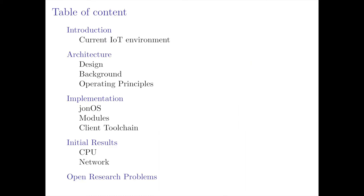This talk is structured in five different sections. First of all, I would like to talk about the context in which this new OS architecture is located. Then I'm going to describe what a Server Kernel is from the theoretical point of view. After that, I'm going to introduce John OS, a Server Kernel implementation for ARM processors. Next, a comparison between John OS and a traditional operating system like Linux. And finally, I want to mention three research problems that this work left open.